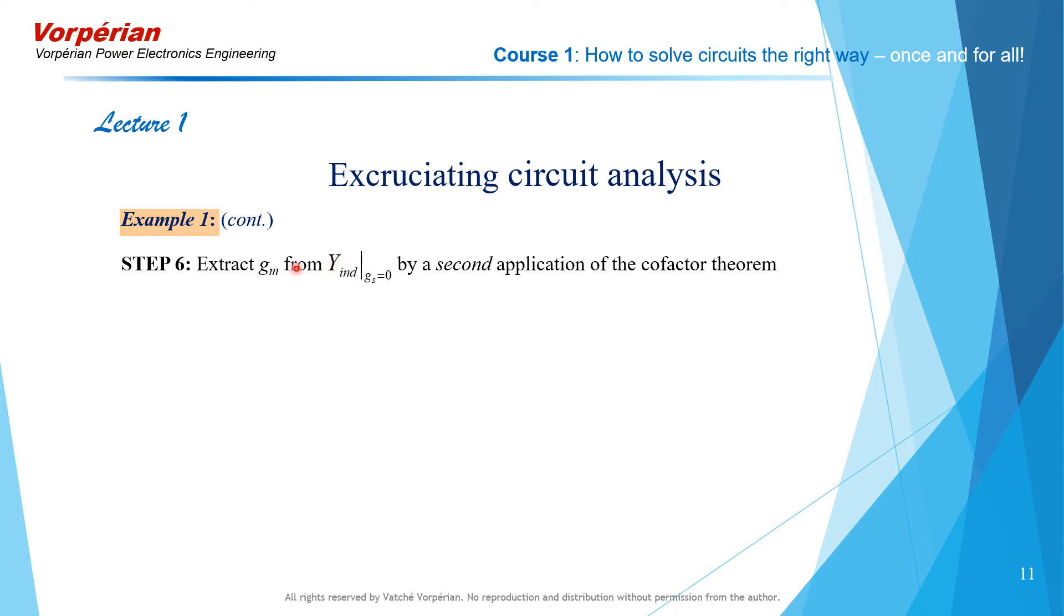Now we're going to extract gm from the first one, in which Gs was set equal to 0, by a second application of the cofactor theorem.